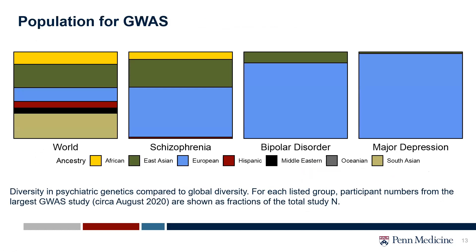One important issue is that the population used for GWAS matters, and currently we have not been doing well at this. The ancestry of the entire world is diverse, but the GWASs run so far for schizophrenia, bipolar disorder, and major depression are predominantly European ancestry samples. This becomes a problem when translating findings into clinical studies.